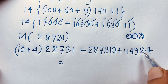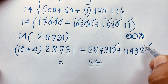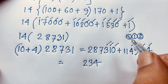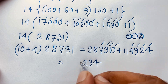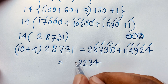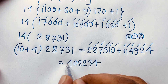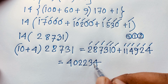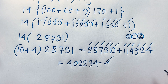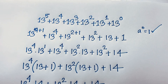Now adding 287,310 plus 114,924: 0 plus 4 is 4, 1 plus 2 is 3, 3 plus 9 is 12 write 2 carry 1, 7 plus 4 plus 1 is 12 write 2 carry 1, 8 plus 1 plus 1 is 10 write 0 carry 1, 2 plus 1 plus 1 is 4. So the final answer is 402,234. This is our final answer. Thank you all — if you enjoyed this video please subscribe for more interesting videos. Goodbye, take care.